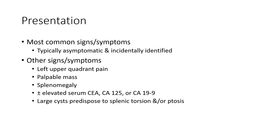Other signs and symptoms include a palpable abdominal mass, splenomegaly, plus or minus elevated CEA, CA-125, or CA-19-9. Additionally, there may be splenic torsion and/or abscess.